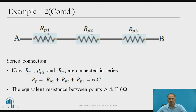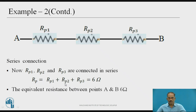Again, between terminals A and B, we have found Rp1 from the first part, Rp2 and Rp3 also calculated. Rp1, Rp2 and Rp3 now come in series. Therefore, the total effective resistance Rp = Rp1 + Rp2 + Rp3. Summing up: Rp1 = 1 Ω, Rp2 = 2 Ω, Rp3 = 3 Ω, so 1 + 2 + 3 = 6 Ω. The equivalent resistance between points A and B is 6 Ω.